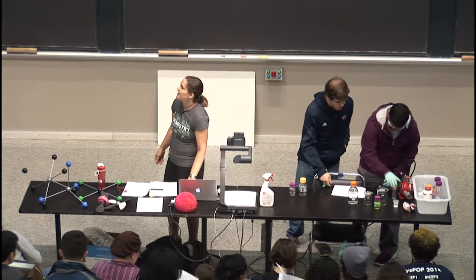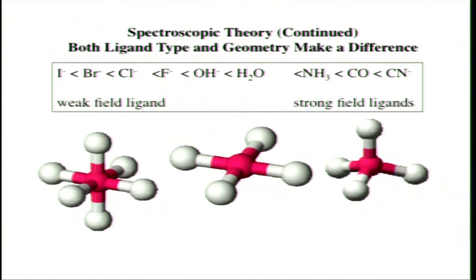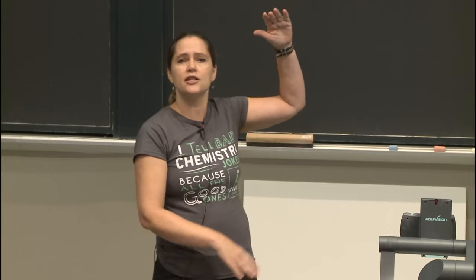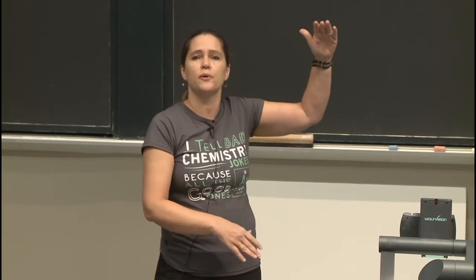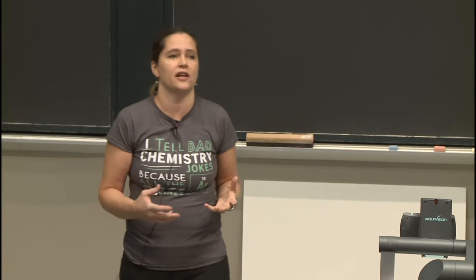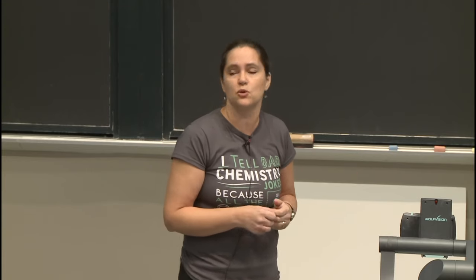On today's handout, we're continuing to think about color, magnetism, and more types of geometries. We've seen that the type of ligand—whether it's a weak field, intermediate field, or strong field ligand—makes a difference in terms of the splitting energy, how much the d-orbitals are split due to the presence of the ligand arranged in octahedral geometry. But the geometry also matters: different geometries lead to different splitting between the d-orbitals.